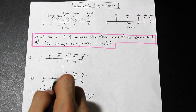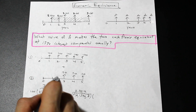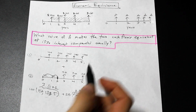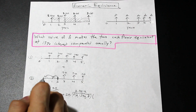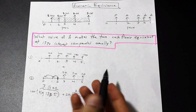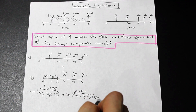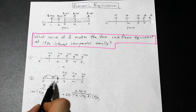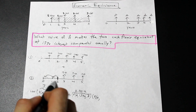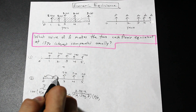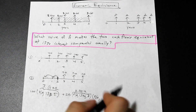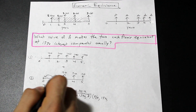Remember, that value is the present worth of the annuity at n equals 2. To bring it back to n equals zero, we multiply by P-given-F to move back two periods. If you want to move backwards on the cash flow, use P-given-F; if you want to move forwards, use F-given-P. So we multiply by P/F(13%, 2), and from the table that factor is 0.7831.